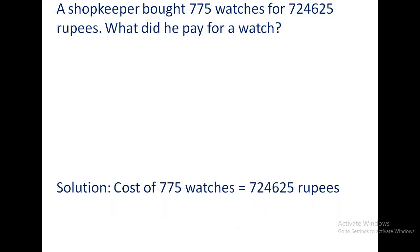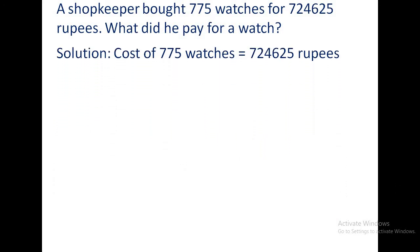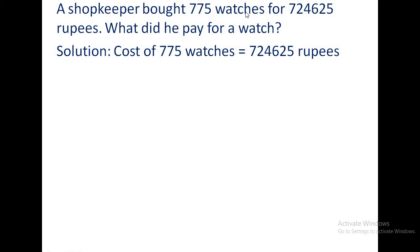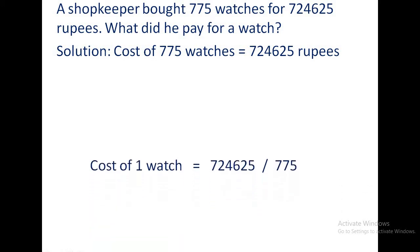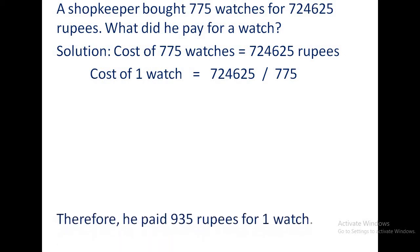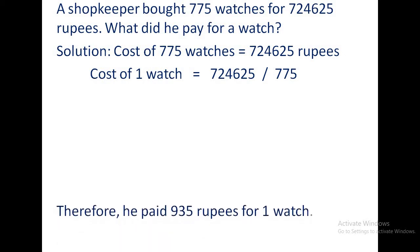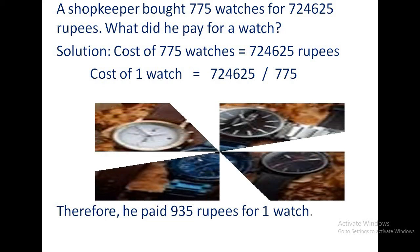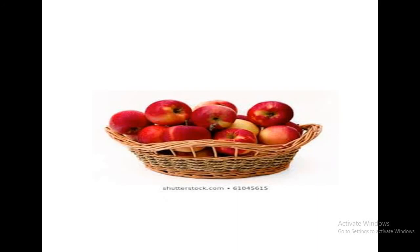Solution sentence: cost of 775 watches is given as 7,24,625 rupees. And you have to find the cost of one watch. For finding the cost per one, you have to divide. So 7,24,625 is divided by 775. After dividing, he paid 935 rupees for one watch. Let us move to the next problem sum.